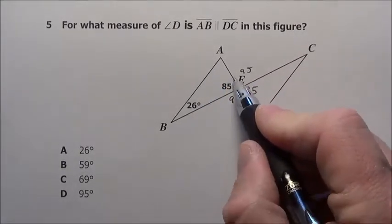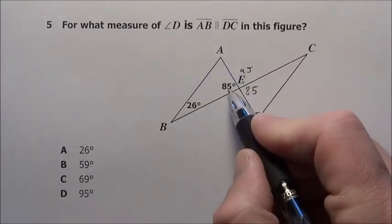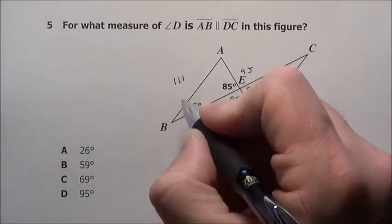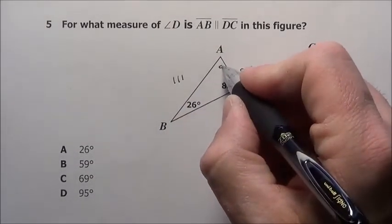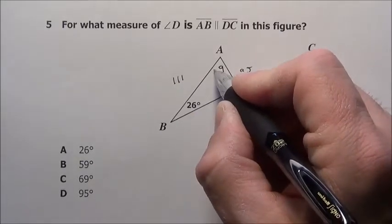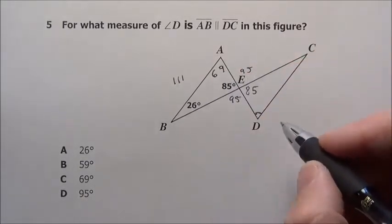And notice we have a triangle right here. 85 and 26 is 111. So to get 180 for a triangle, that would make it 120, it would be 69 right here.